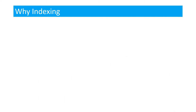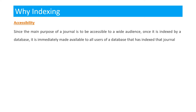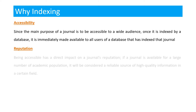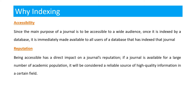Now why do we need indexing? There are certain benefits. The first one is accessibility — since the main purpose of a journal is to be accessible to a wide audience, once it is indexed by a database it is immediately made available to all users of that database. The second benefit is reputation — being accessible has a direct impact on a journal's reputation.